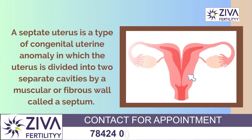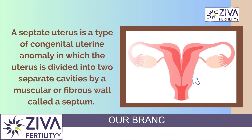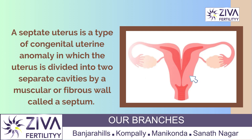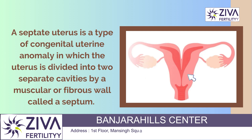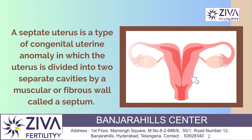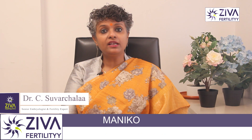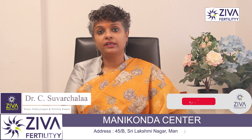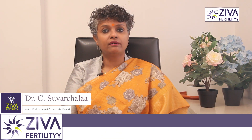A septate uterus is a type of congenital uterine anomaly in which the uterus is divided into two separate cavities by a muscular or fibrous wall called a septum. This condition occurs during embryonic development when the uterus fails to fuse completely, resulting in a partition that separates the uterine cavity into two halves.